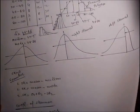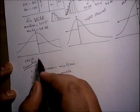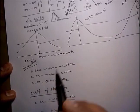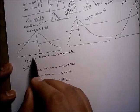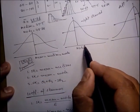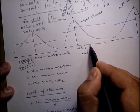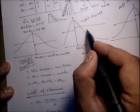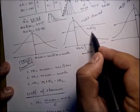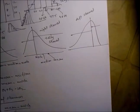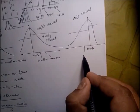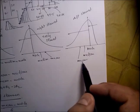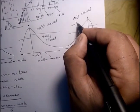Looking at the formula SK = mean − median: for a symmetric distribution, mean equals median equals mode, so SK is 0. For a right-skewed distribution, mode lies to the left, then median, then mean — so mean minus median and mean minus mode are both positive values, hence it is positively skewed. For a left-skewed distribution, mean minus median and mean minus mode are both negative values, so it is negatively skewed.